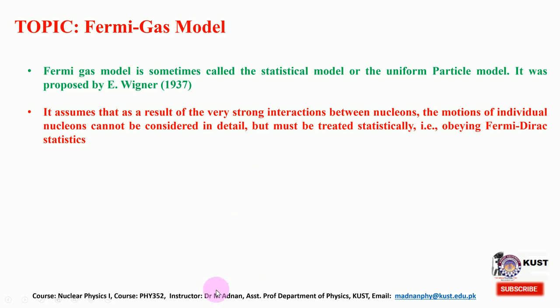When we talk about the weakly bound system, that is the deuteron, the binding energy was around 1.1 MeV since in the deuteron we have only two nucleons. We will see the relationship between the strength of the potential energy, kinetic energy, and binding energy, and how they are linked based on the statistical approach.